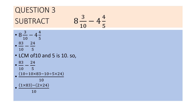Question 3: subtract 8 and 3 by 10 minus 4 and 4 by 5. First, we convert to improper fractions: 8 into 10 plus 3 gives 83 by 10, and 4 into 5 plus 4 gives 24 by 5. So the question becomes 83 by 10 minus 24 by 5.